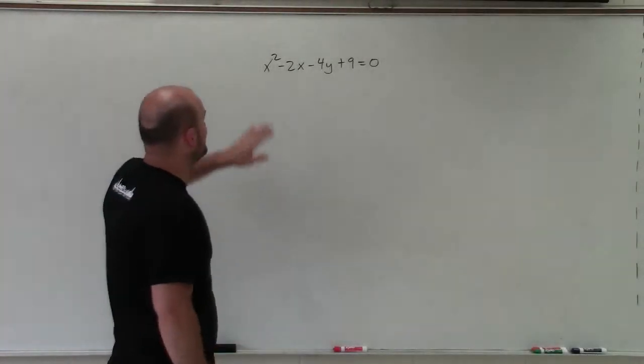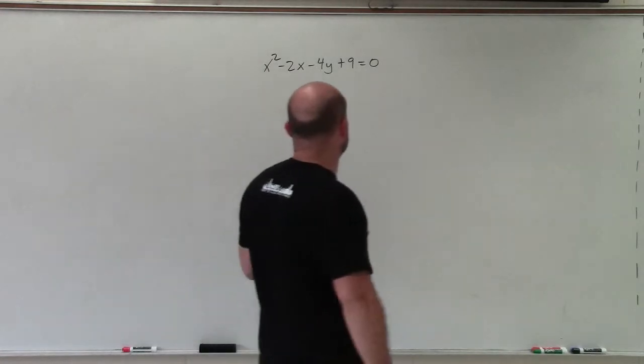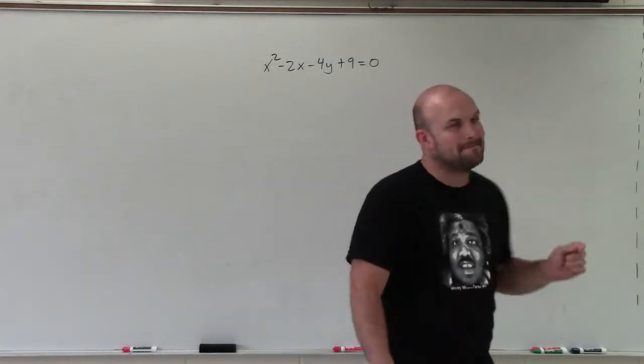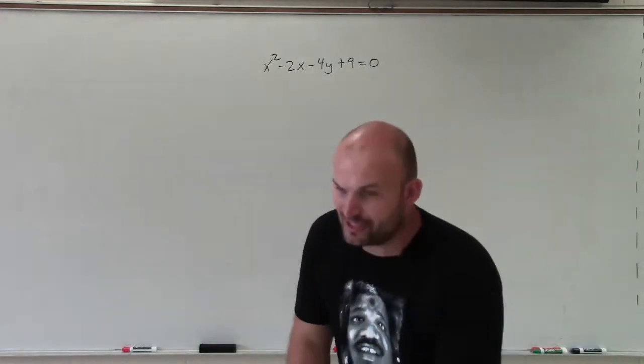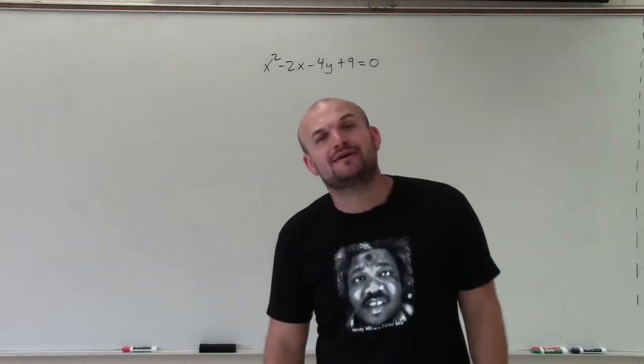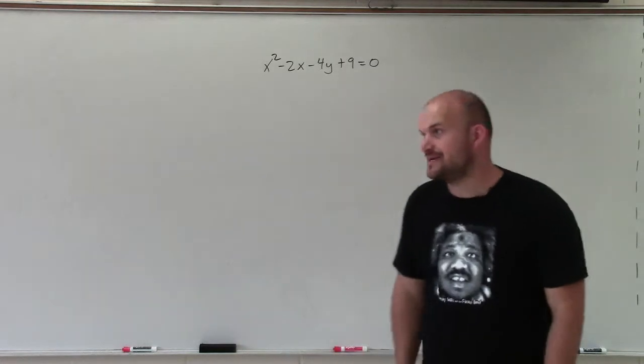Welcome, ladies and gentlemen. So what I have here is x squared minus 2x minus 4y plus 9 equals 0. And what I want to do is show you how to graph the parabola.